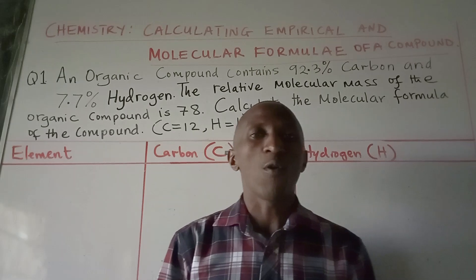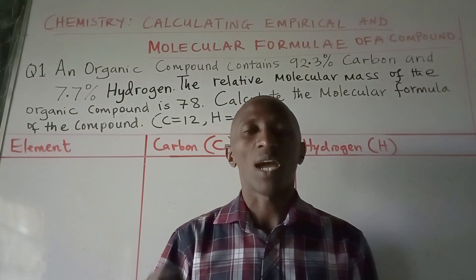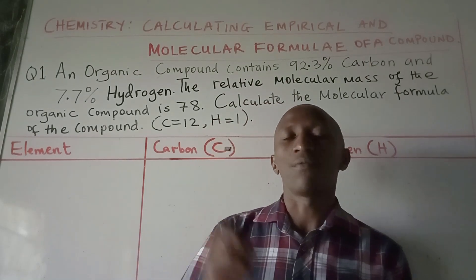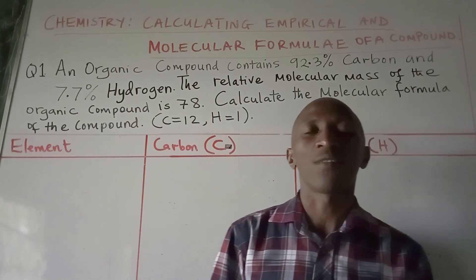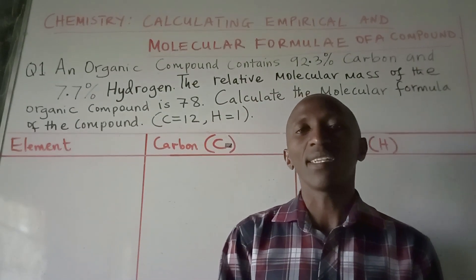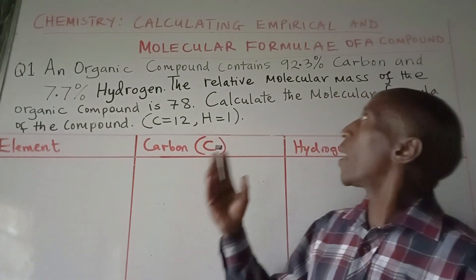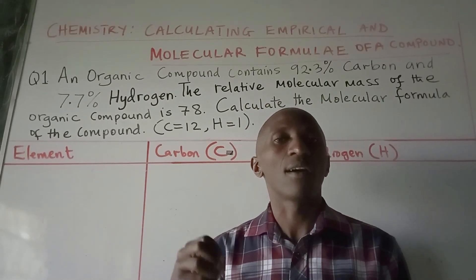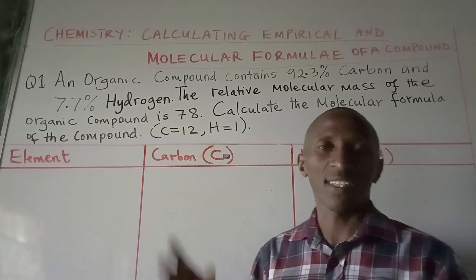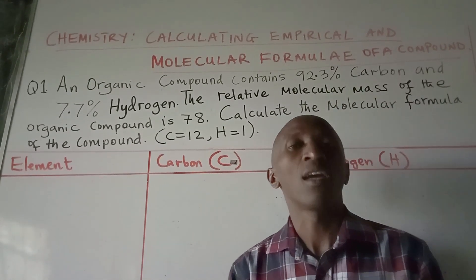We are doing this having borne in mind the fact that you did a topic in Form 2 on how to write chemical equations and how to write the chemical formula of a compound using the valences, be it the valences of the metal, non-metal, or the valences of a radical. There are two approaches used to determine the chemical formula: the theoretical approach using valences, or the empirical approach using experimental data. We shall learn this through a set of questions, and at one point I will give a question for you to solve on your own to make the lesson interactive.